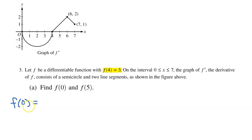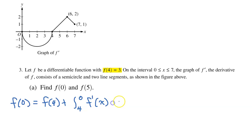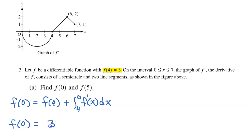So if I want to find f at 0, that's going to equal the initial value f at 4, plus the integral from 4 to 0 of f prime. Since we are given f at 4 equals 3, all we really need to do is evaluate the integral of f prime from 4 to 0. We are looking at the graph of f prime — here is 4, and here is 0. The integral of f prime from 4 to 0 is the area between the x-axis and the curve between 4 and 0.